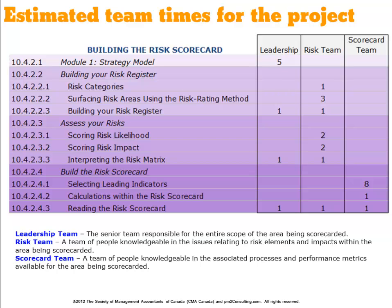This work is designed so you can do it by yourself, or you may want to do it in conjunction with teams inside your organization. Typically three teams can get involved: the leadership team — the senior team responsible for the scope of area you're going to be looking at; the risk team — people that are typically well versed in the risks associated with your industry and your organization; and finally a scorecard team — people that have process expertise and understand where processes and measures exist inside your organization.